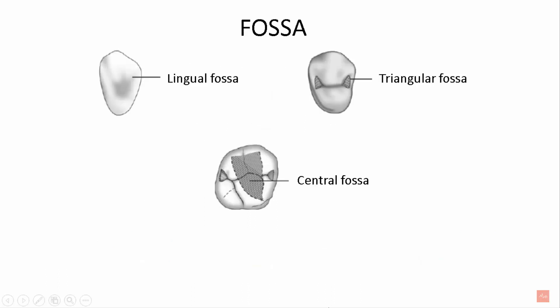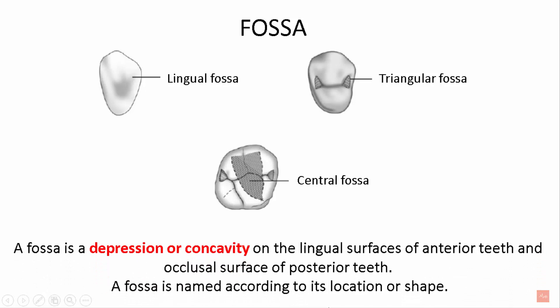A fossa is a depression or concavity on the lingual surfaces of the anterior teeth and occlusal surfaces of the posterior teeth. On an anterior tooth the lingual portion has a depression called the lingual fossa. A premolar has a triangular-shaped depression called the triangular fossa. A molar has a central fossa. A fossa is named according to its location or shape.